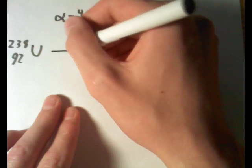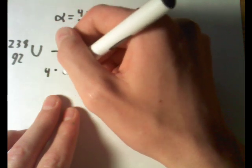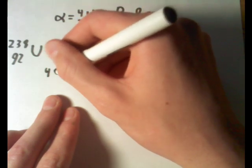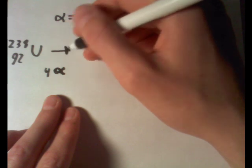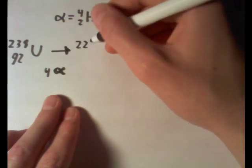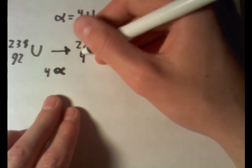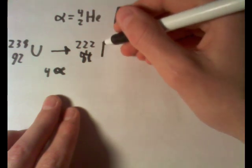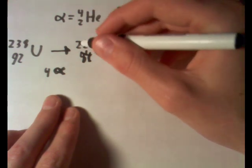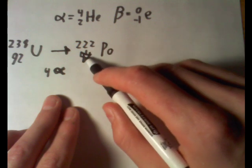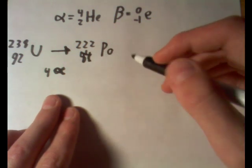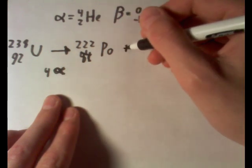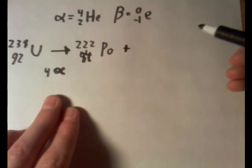And let's say it undergoes 4 alpha decays and makes polonium 222, actually this is 84. So polonium with 222 mass and 84 charge, and undergoes 4 alpha decays. Well, this is a pretty simple question, because all we really have to do is, again, I'm going to use that word equilibrium.